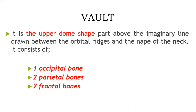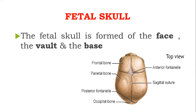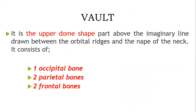Let's begin with the vault. This is the upper dome-shaped part, as seen in this picture, viewed superiorly. The vault is composed of the following bones: one occipital bone, two parietal bones, and two frontal bones. The occipital bone is found at the back of the head. The two parietal bones are found on the sides of the fetal skull. The two frontal bones are found anteriorly in relation to the fetal skull.